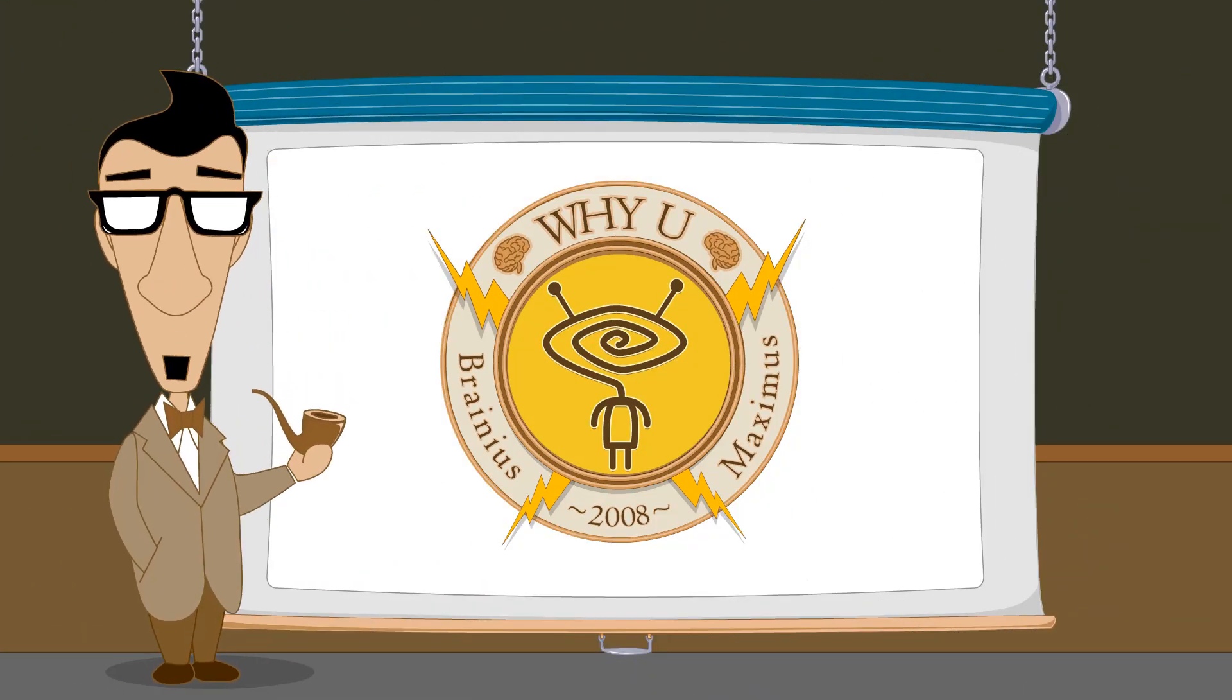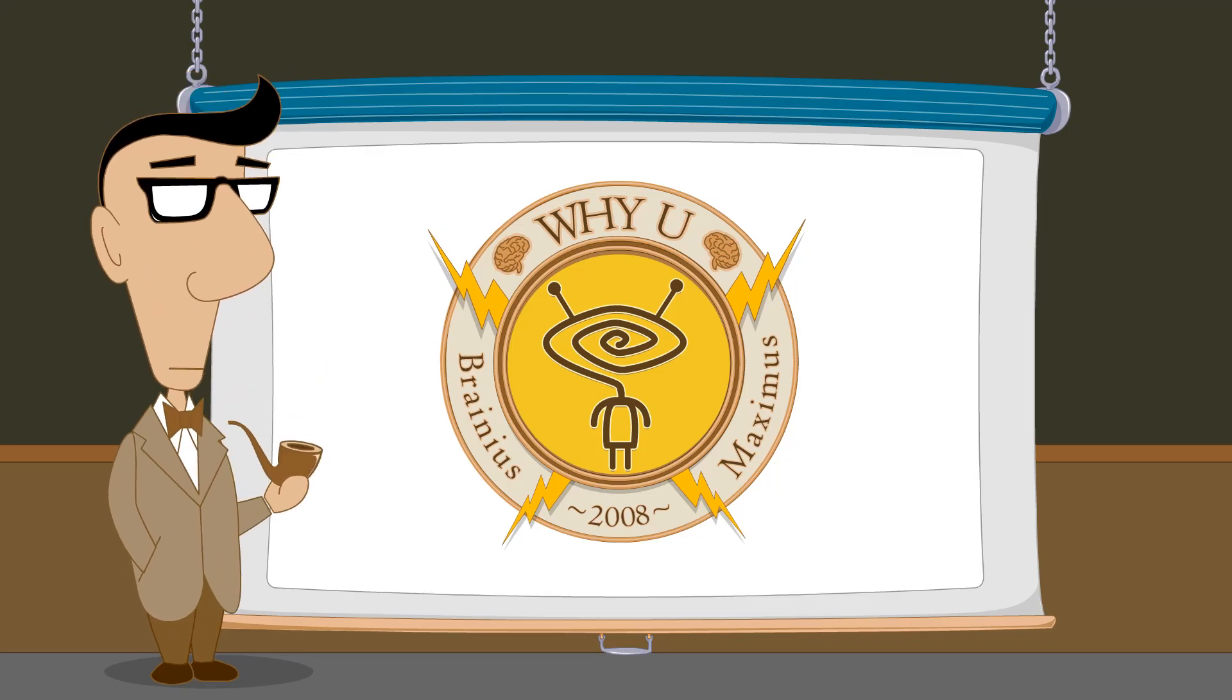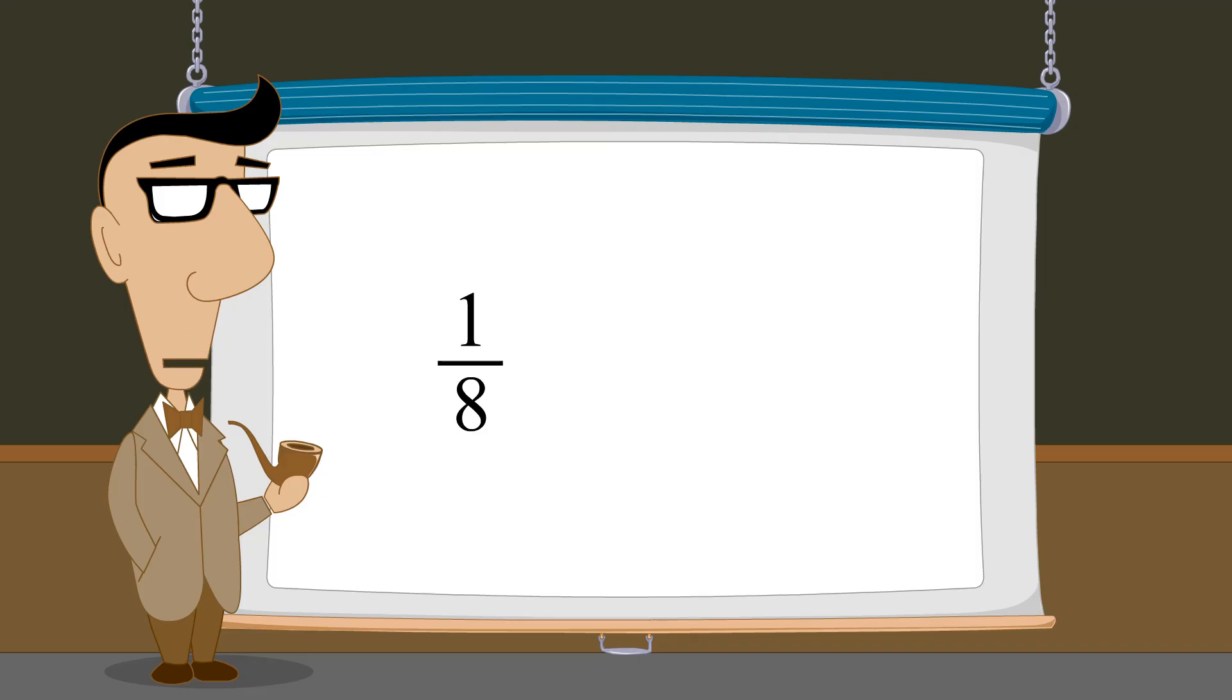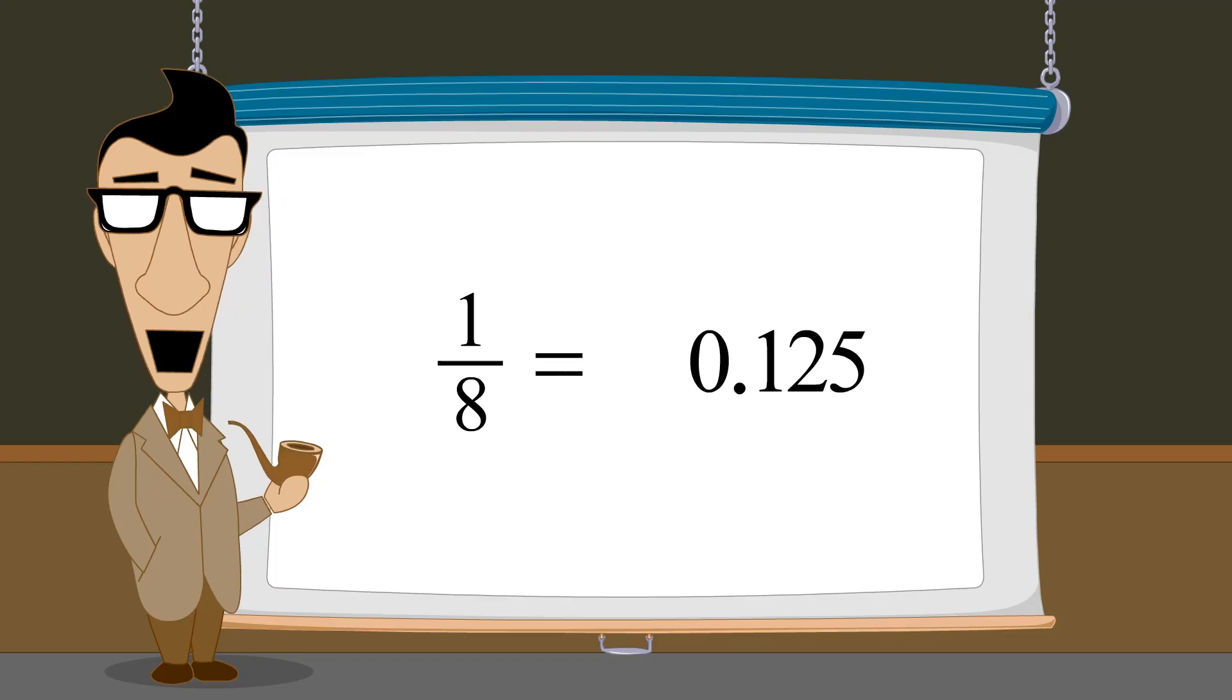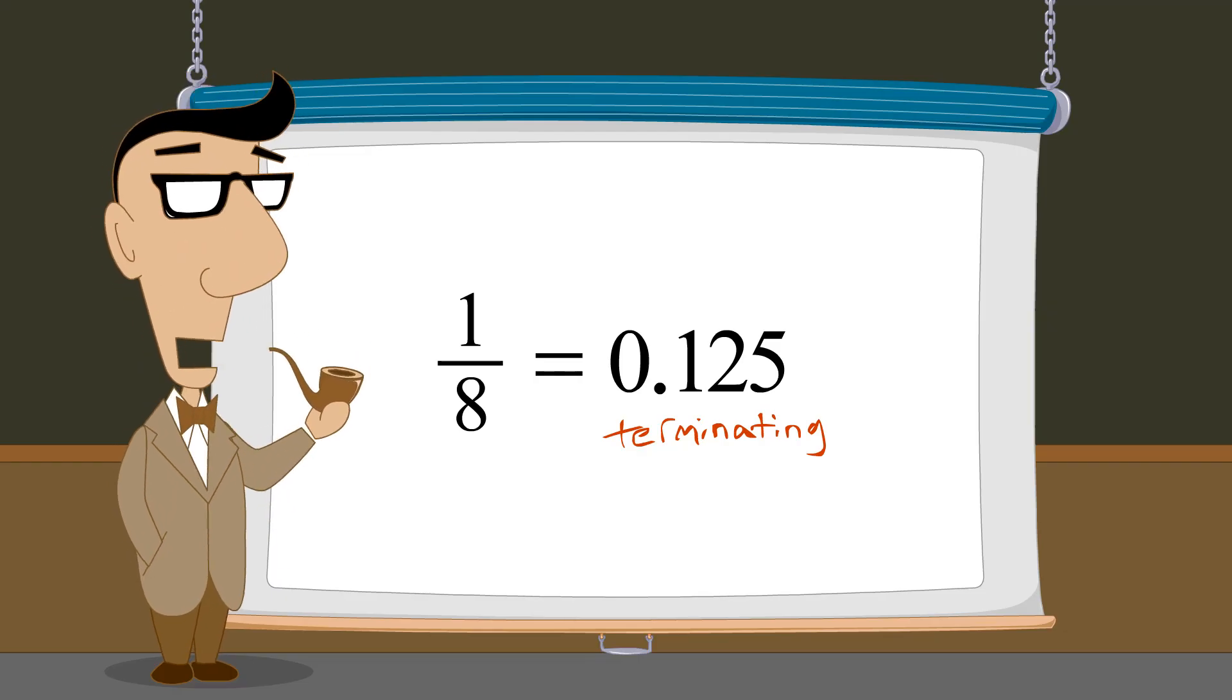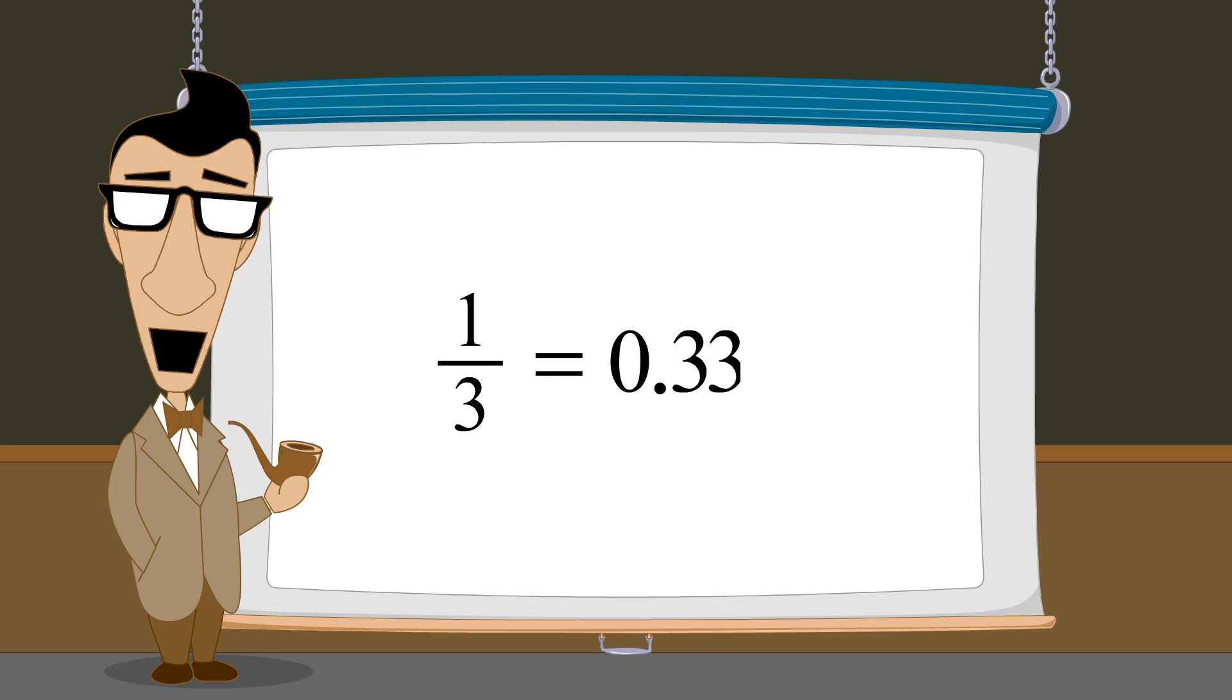Hello. I'm Professor Von Schmohawk, and welcome to Why U. In the last lecture, we saw that any fraction can be converted to a decimal number by simply dividing the numerator by the denominator. The result of this division will be a decimal number which is equivalent to the fraction. This decimal number will either terminate, meaning that it can be represented with a finite number of digits, or it will have one or more digits which repeat forever.